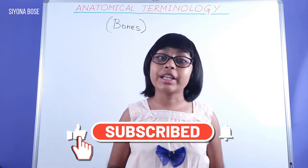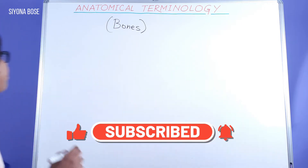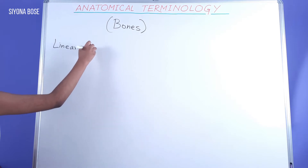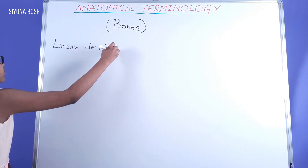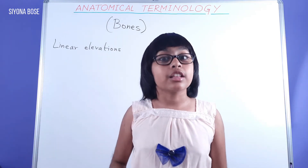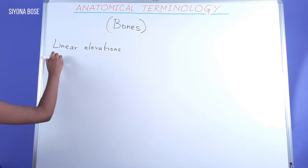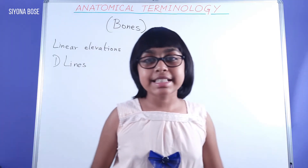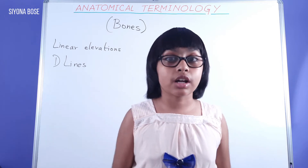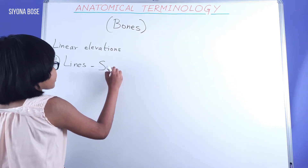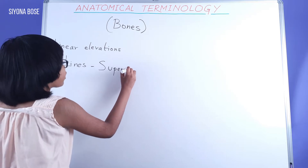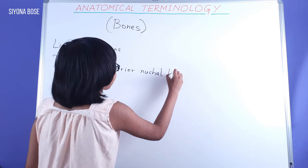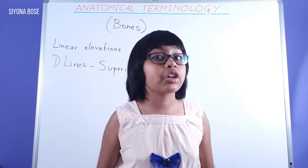First we will talk about linear elevations in bones. We will begin with lines. For example, the superior nuchal line and an inferior nuchal line.